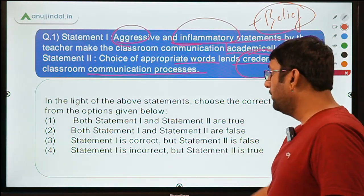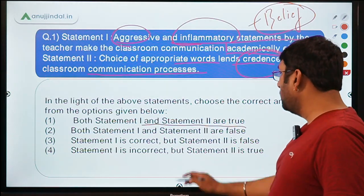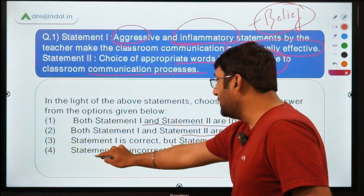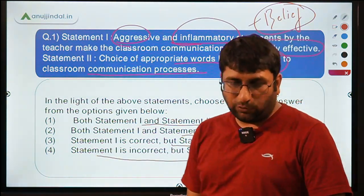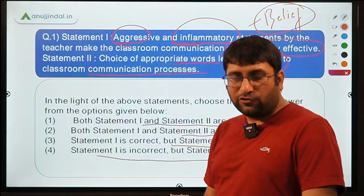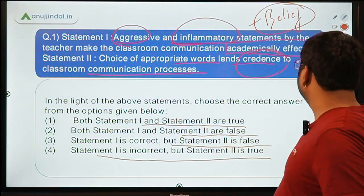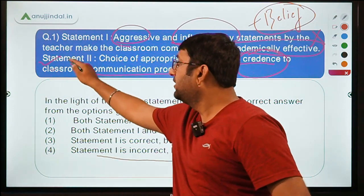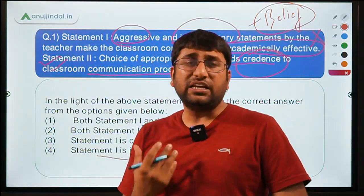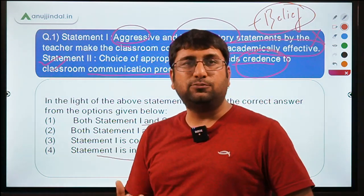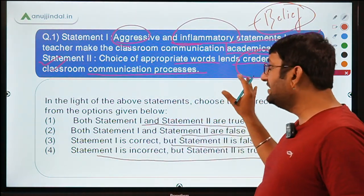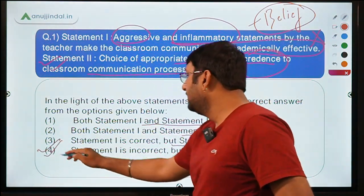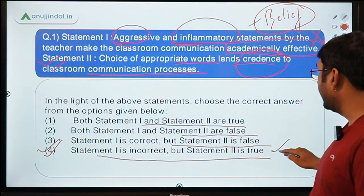Let's look at the options: Both statements 1 and 2 are true; Both are false; Statement 1 is correct but statement 2 is false; or Statement 1 is incorrect but statement 2 is true. I can see majority answers are coming for D — statement 1 is incorrect, and statement 2 is absolutely correct. Because using positive words helps students understand and sail through, the correct answer is option 4: statement 1 is incorrect, whereas statement 2 is true.